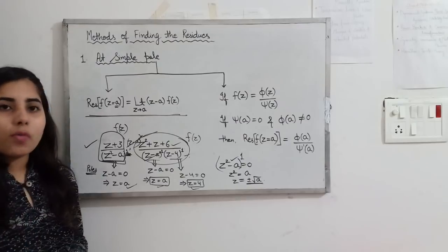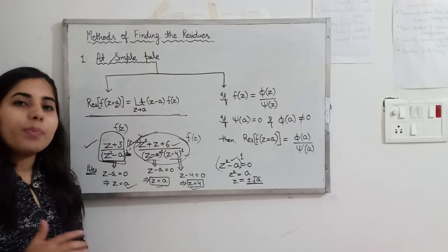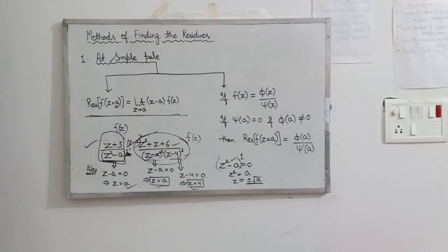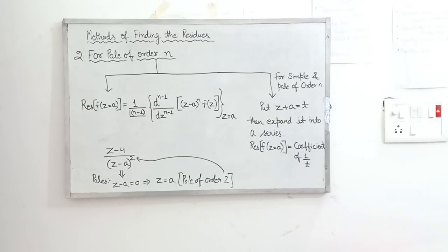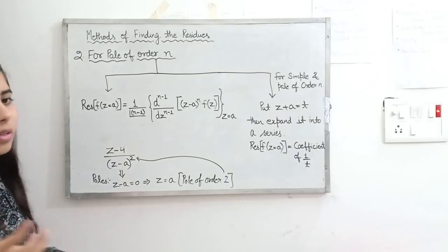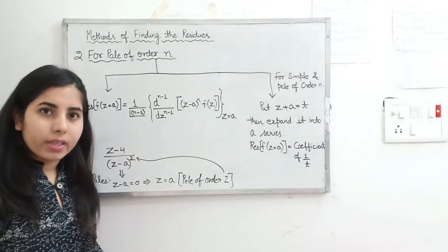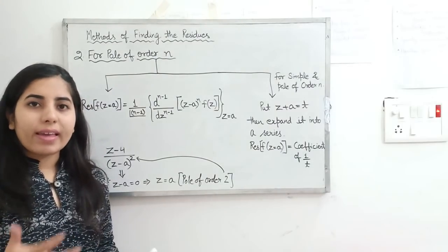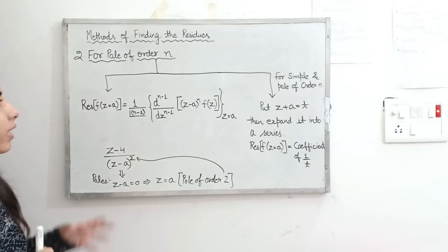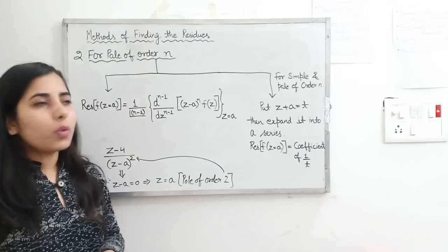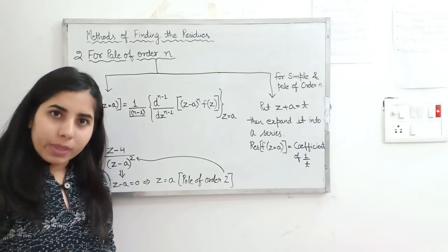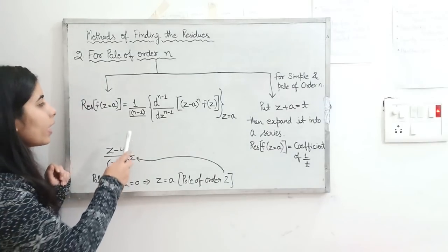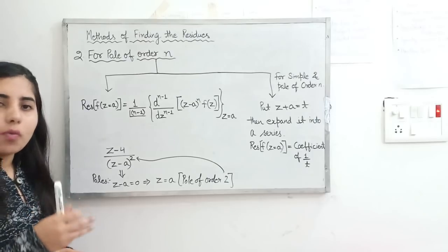Next we will discuss finding the residue for a pole of order n, which is also very important. Now we are going to discuss the method of finding the residue for a pole of order n, where n means 2, 3, or any higher value. There are two methods — the second method is applicable to both simple poles and poles of order n, while the first method is specifically for pole of order n.